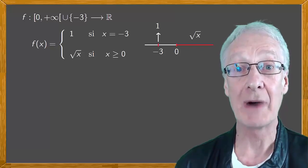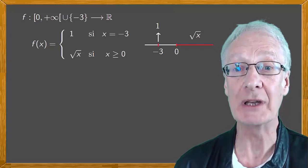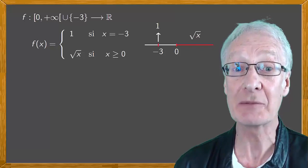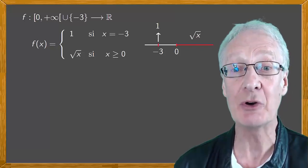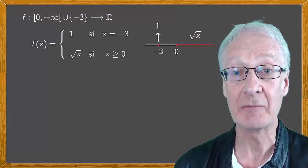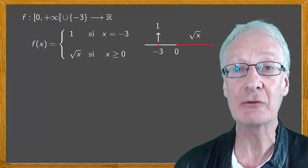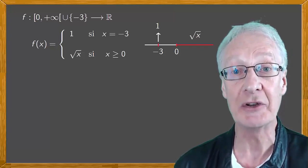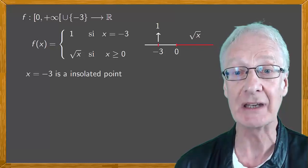x equals minus three is a domain point, but we can't calculate the limit at x equals minus three, because we can't approach it with domain points other than itself. In other words, x equals minus three is not an accumulation point of the domain. It's an isolated point.